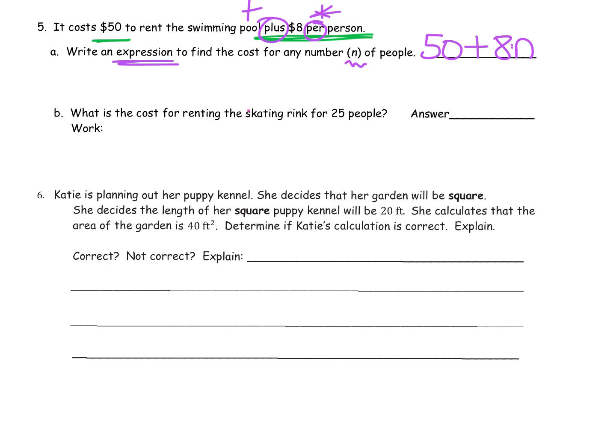What is the cost of renting the pool for 25 people? So this is how many people I have is 25. So I'm going to put 25 in for my variable. 50 plus 8 times 25. Order of operations we multiply first. So 8 times 25 is 200. And then we have to add 50. So it would cost $250.